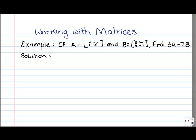In this video, we're going to have a look at matrix subtraction and multiplication by a scalar. In this particular example, we're given the matrix A equals 2, negative 5, 1, 9, and the matrix B equals 3, 2, 6, negative 1, and we're asked to find 3A minus 7B.